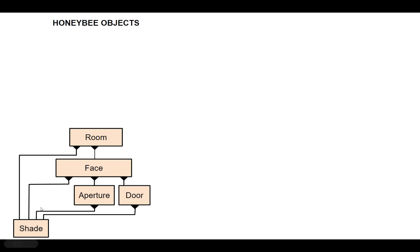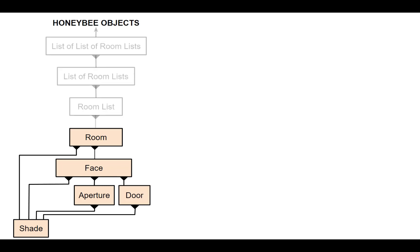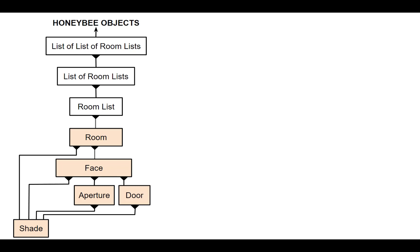In Honeybee, rooms are composed of even more detailed elements — faces that make up the envelope and define the volume of the room. Those faces can host apertures, windows, skylights, and doors, and all these objects together host shade. If I wanted to build an urban model with a hierarchy of stories and buildings in Honeybee, I'd have to manage groups of rooms as lists of lists of lists — it would get very difficult to manage.